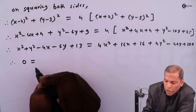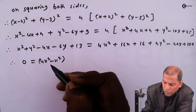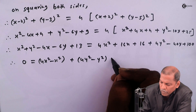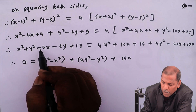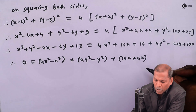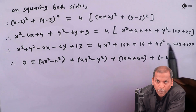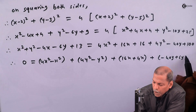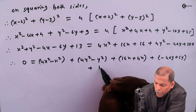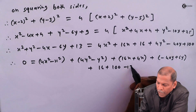Therefore, setting the equation to zero, we rearrange: taking terms from the right to the left, we have 4x squared minus x squared, and 4y squared minus y squared, then 16x plus 4x, then minus 40y plus 6y, and finally plus 16 plus 100 minus 13.